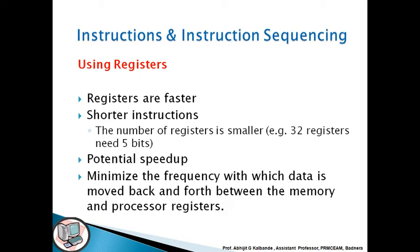The number of registers is smaller, for example 32 registers need 5 bits. The potential is the speed up, minimize the frequency with which the data is moved back and forth between the memory and the processor registers.